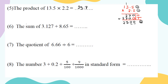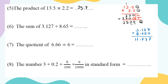The sum of 3.127 plus 8.65: line up decimal under decimal. Put 3.127 on top. Below, put 8, then 6, then 5, then add a zero to balance. Add: 7 plus 0 = 7; 2 plus 5 = 7; 1 plus 6 = 7; drop the decimal; 3 plus 8 = 11, carry 1. The answer is 11.777.